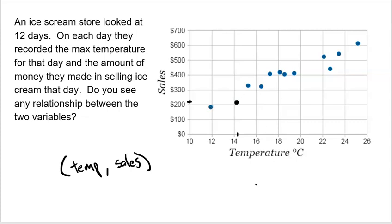So for example, on this day right here, it looks like the temperature was, I got to estimate maybe 14.2 degrees Celsius. And we sold, again, I got to kind of guess here, maybe $210 of ice cream. And each point represents a day. And again, that day was measured twice. We measured the temperature of that day and the sales of that day, both quantitative variables.